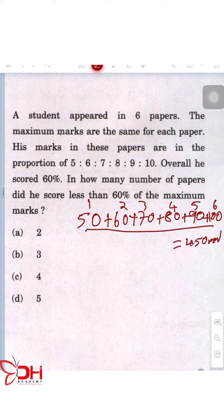Now this 450, as mentioned in the question, this is nothing but 60%. This is how much he has scored. Now if you want to calculate 100% of this, 100% is equal to 450 divided by 60 into 100. This basically gives you a value of 750.